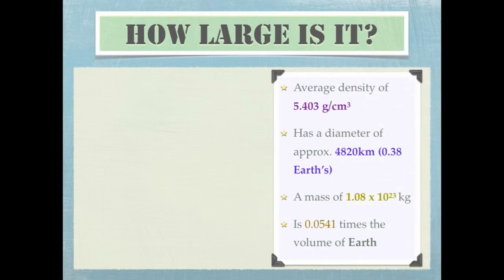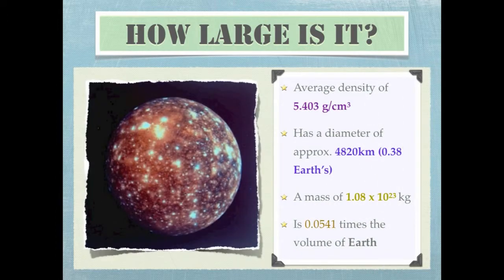Callisto has an average density of 5.403 grams per centimeter cubed and a diameter of approximately 4,820 kilometers, which happens to be 0.38 times that of Earth. It also has a mass of 1.08 times 10 to the power of 23 kilograms, which is 0.018 times that of Earth.